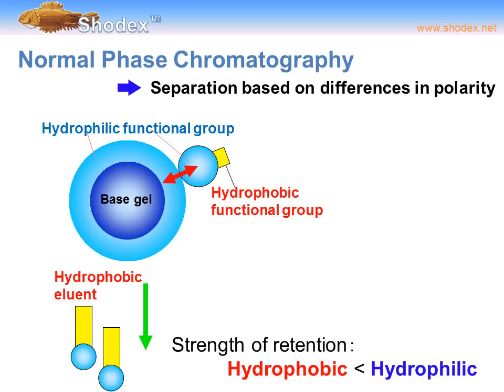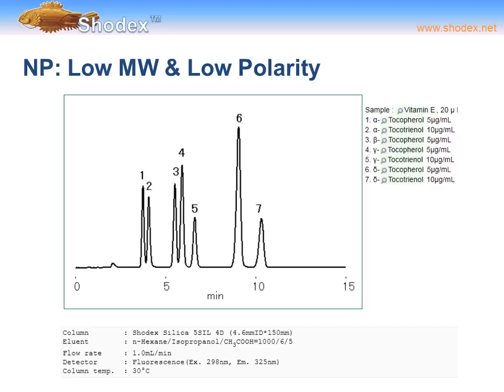In normal phase chromatography, separation is based on differences in polarity. The particle comprising the solid support of the HPLC column is modified on the surface with hydrophilic functional groups, which attract the hydrophilic functional groups of the analytes. The hydrophobic part of the analyte — if present — faces away from the hydrophilic particle surface. Hydrophobic eluents should be used and will pass through the column unretained. The strength of retention is hydrophilic over hydrophobic, so highly hydrophilic molecules are retained longer than weakly hydrophilic ones.